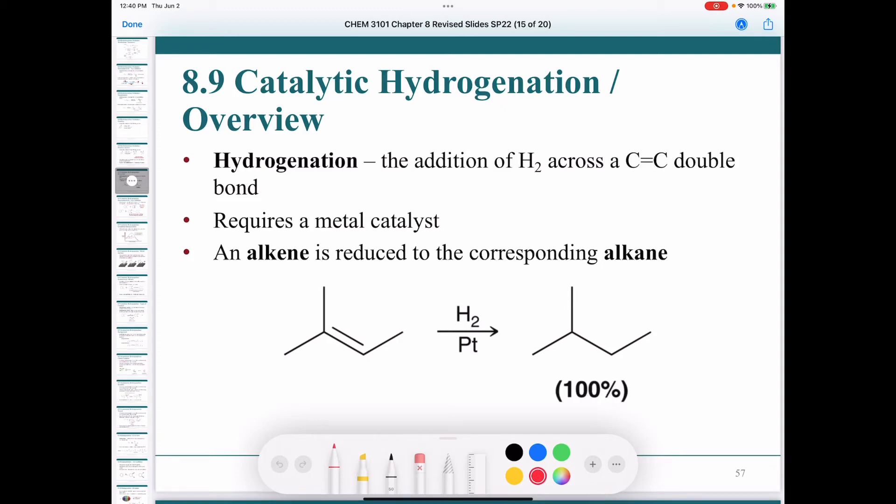Catalytic hydrogenation, or just hydrogenation, is the addition of hydrogen across a carbon-carbon double bond. And in order for hydrogenation to occur, we need a metal catalyst.